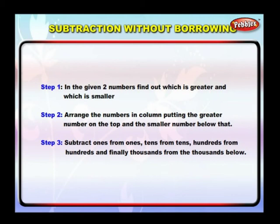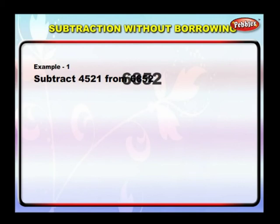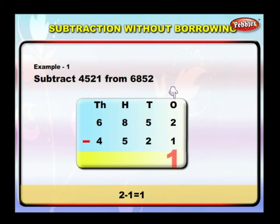Let us see an example. Subtract 4521 from 6852. 6852 is the greater number. Arrange them in a column, one below the other. Now start subtracting. Subtracting ones: 2 ones minus 1 one is equal to 1. We write 1 under the ones column. Subtracting tens: 5 tens minus 2 tens is equal to 3 tens. We write 3 under the tens column.